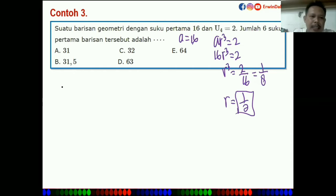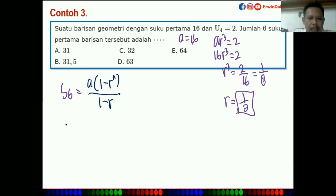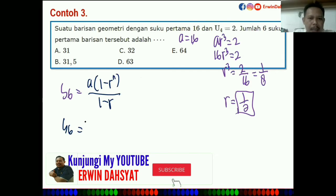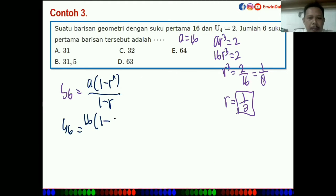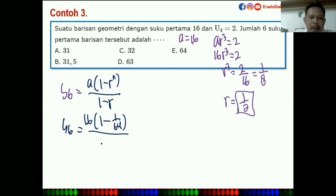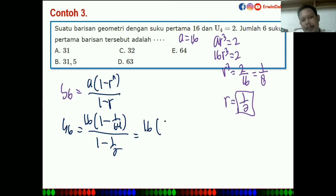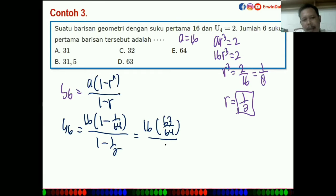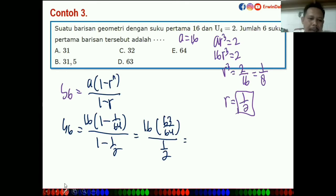Yang ditanya S6. Rumus SN = A(1 - R^N) / (1 - R). Berarti S6 = 16 × (1 - (1/2)⁶) / (1 - 1/2) = 16 × (1 - 1/64) / (1/2).